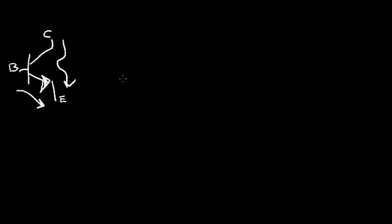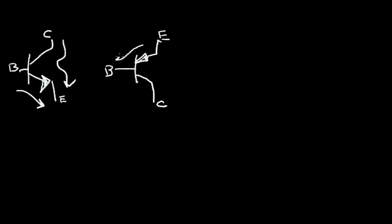The PNP transistor behaves in a similar manner, except a lot of things are reversed. Let's draw the PNP symbol. This is the emitter, this is the collector, and this is the base. What happens here is that the emitter-base diode is forward biased, so when that happens, we inject a small current in the base region. That causes a current amplification from emitter to collector. So we inject a small current out of the base, and we get a large current flowing from emitter to collector.